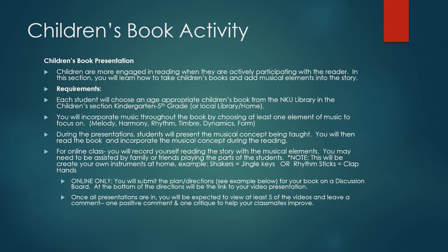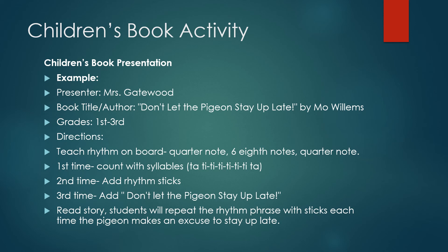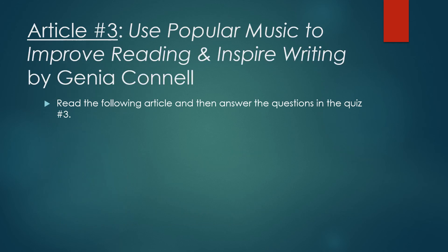Here is my example for you — these directions are already on Canvas. You'd put your name as presenter, the book title and author, and what grade it's focused on. Mine is focused on first through third grade. Then write the directions: what we're supposed to do prior to reading, so for example teach the rhythm on the board. I went through how I would teach it — first time by syllable, second time add rhythm sticks, third time add the phrase 'don't let the pigeon stay up late.' When you watch my third video on rhythm, this is the actual activity. Then include how people will interact with the book as they're listening.